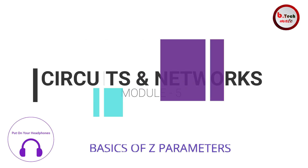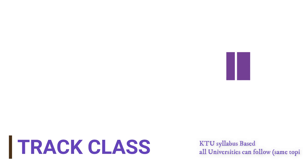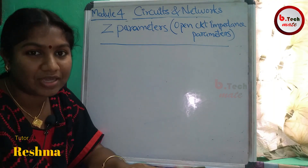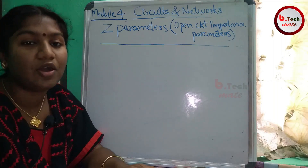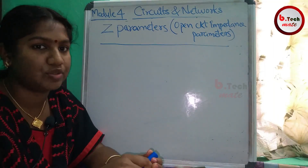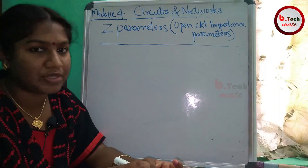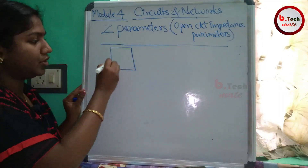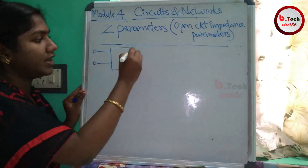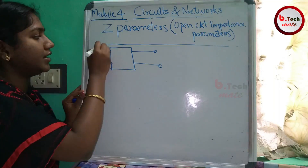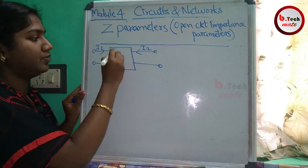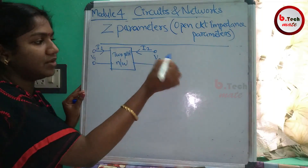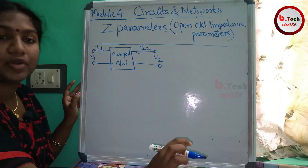Welcome to the Z-parameters. Z-parameters are also called Open Circuit Impedance Parameters. Let's consider a two-port network. A two-port network has Input Terminals and Output Terminals. The input side has current I1 and voltage V1, and the output side has current I2 and voltage V2.